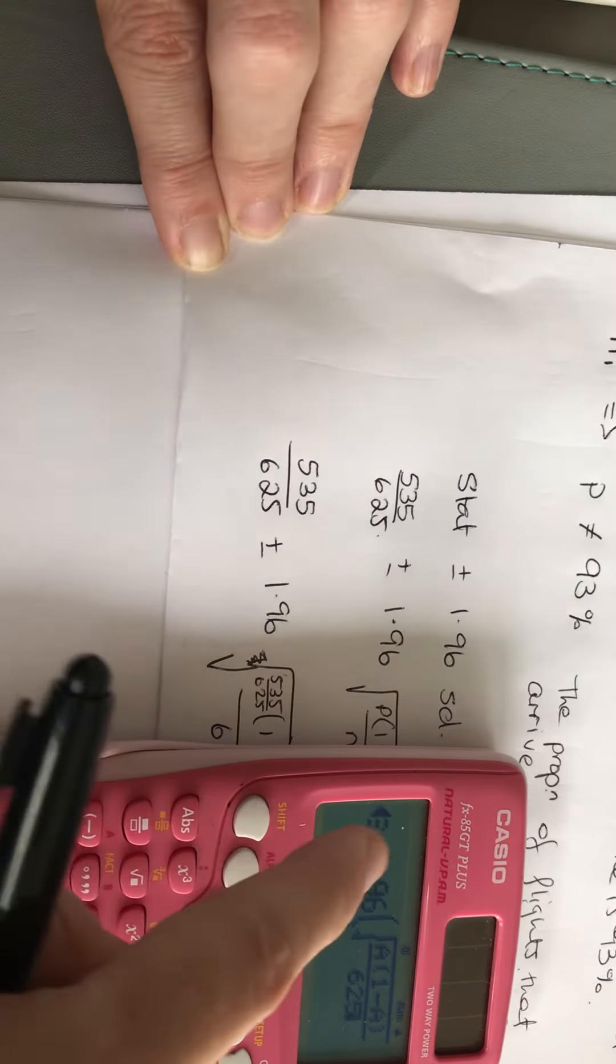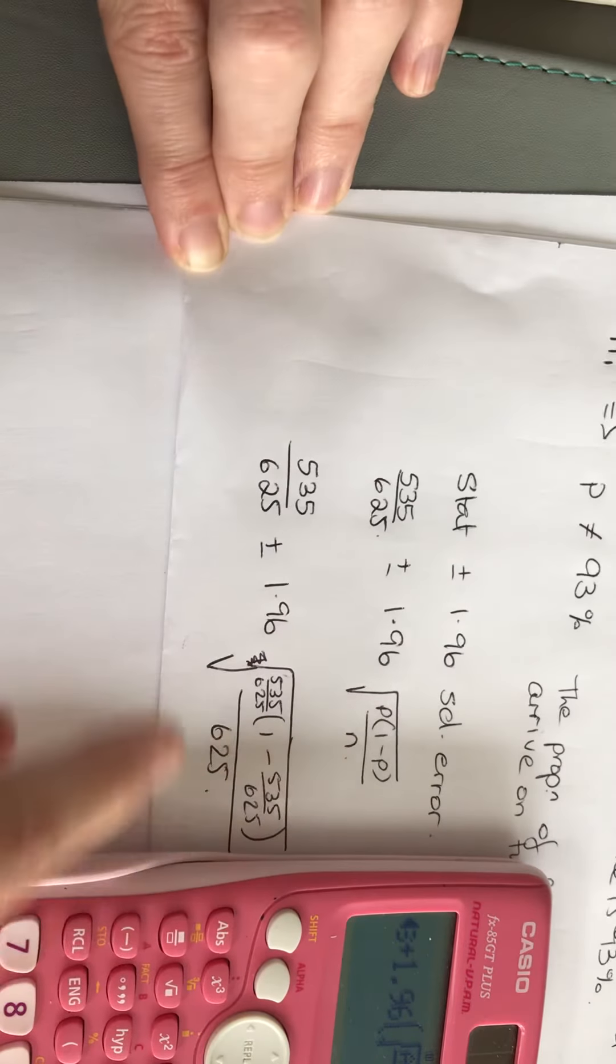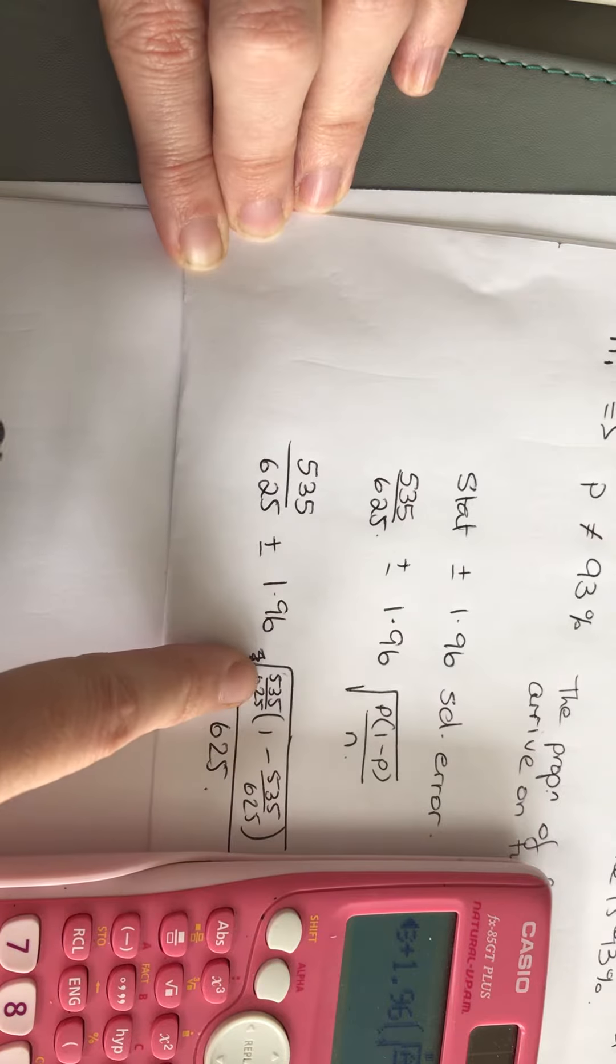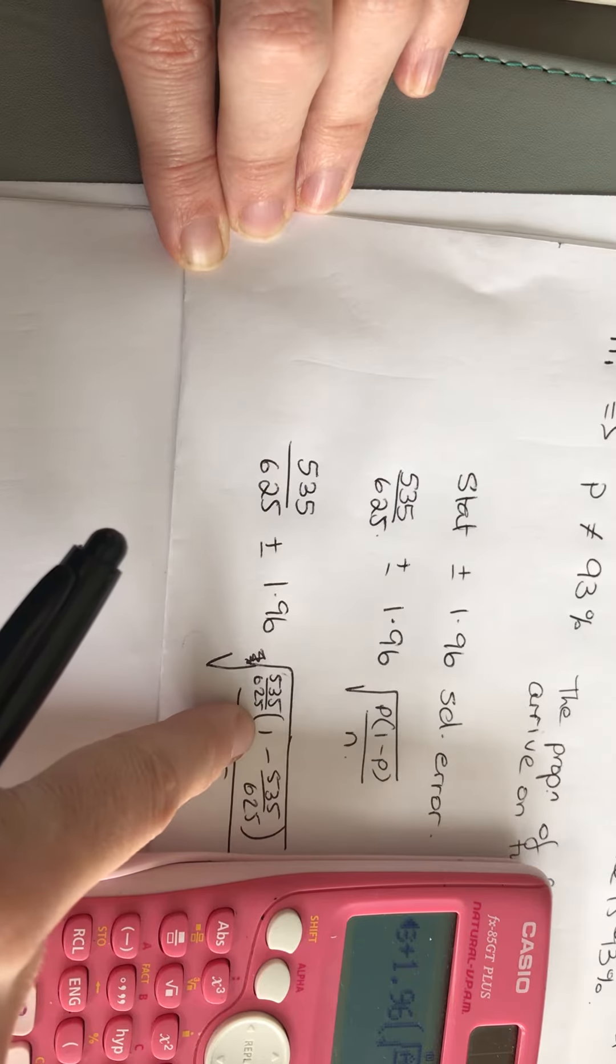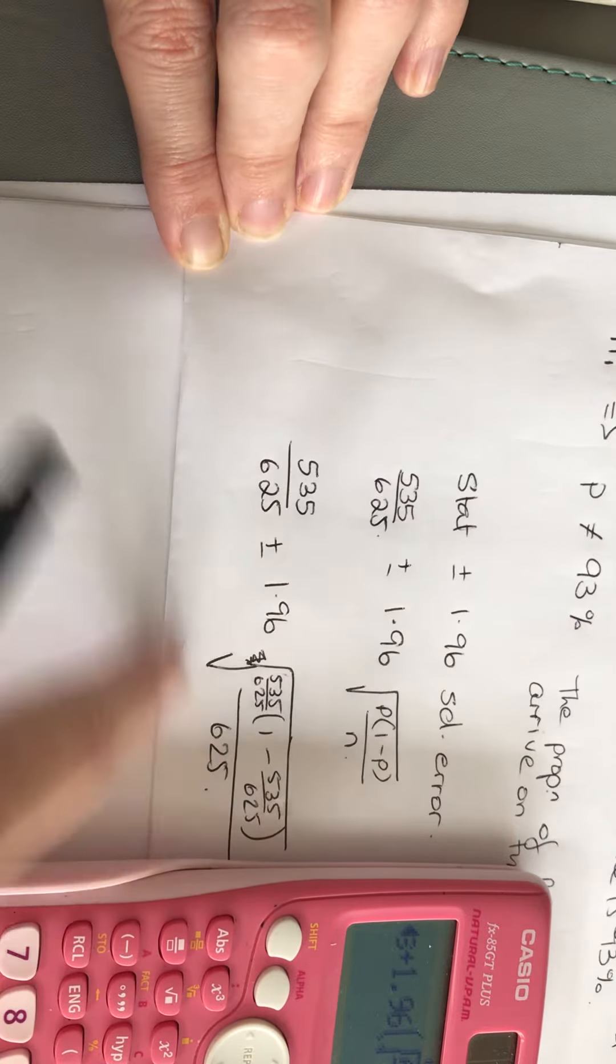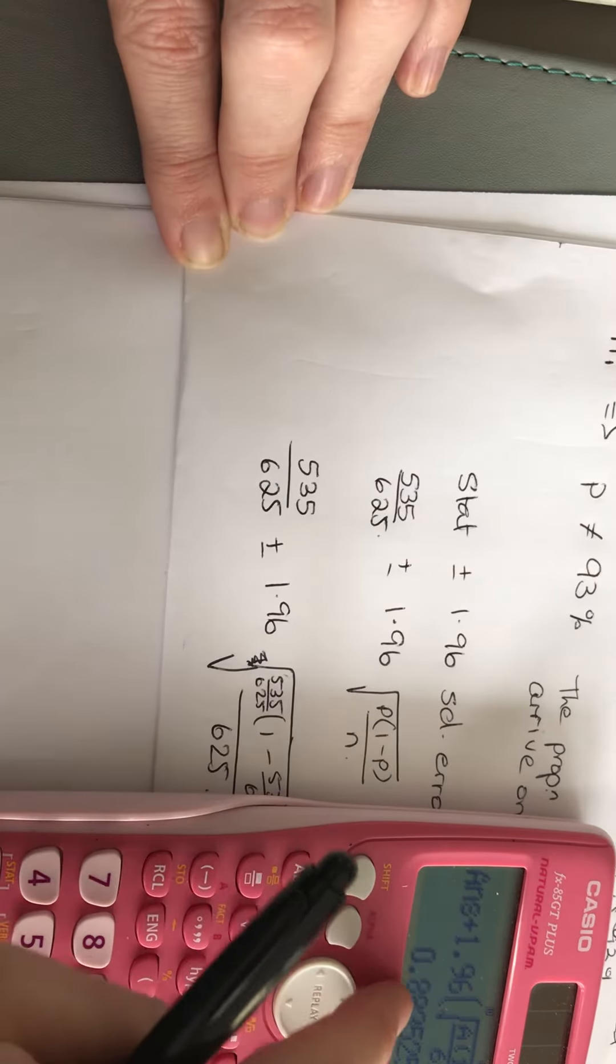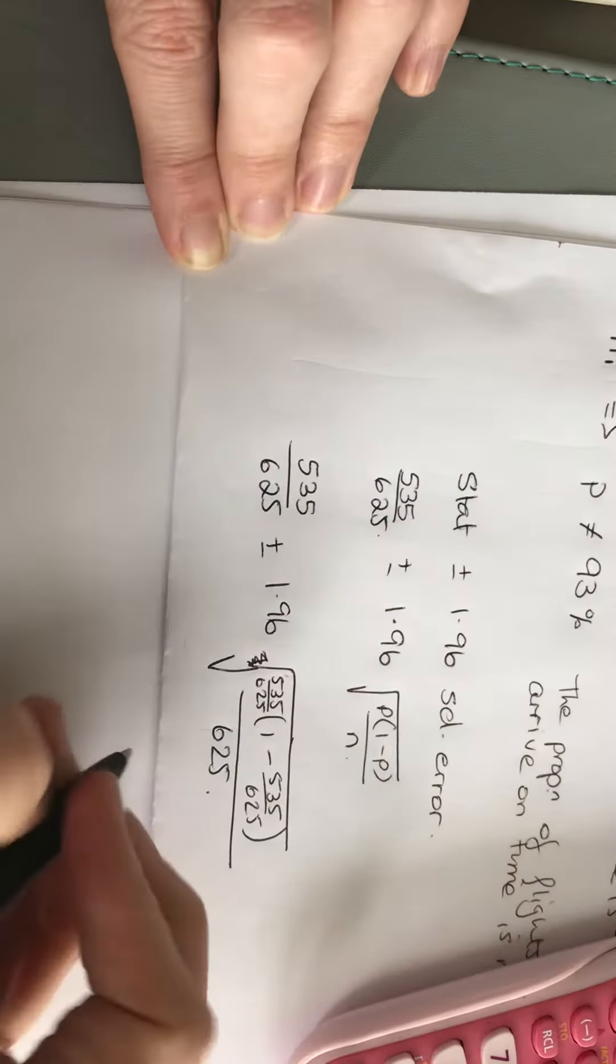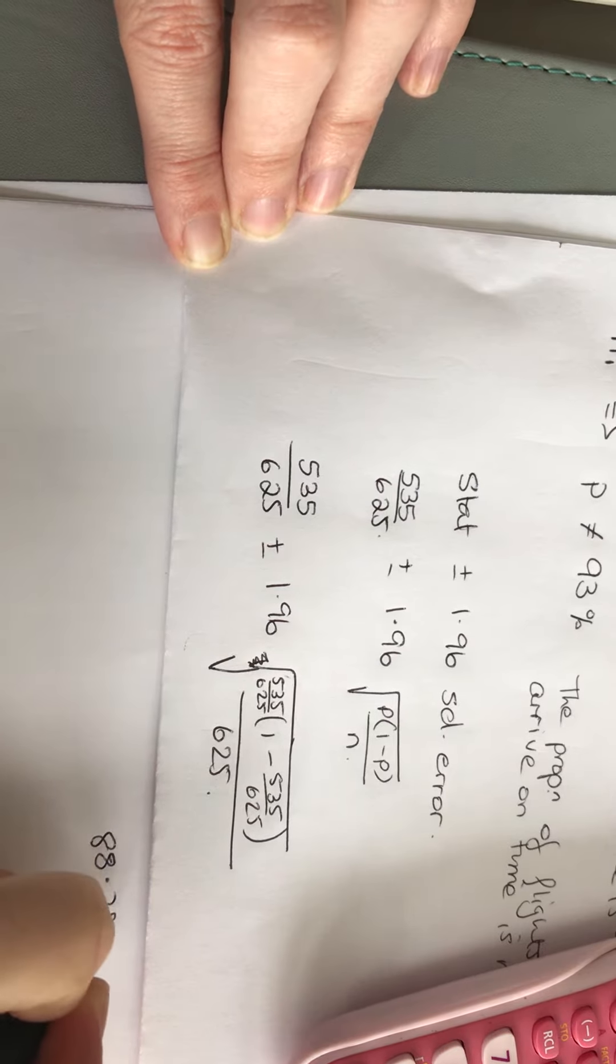So it's my P hat plus or minus 1.96. I don't have P, I have their version of it. I do want to trust them, but I don't know. So P hat bracket 1 minus P hat all over 625. And then I should just be able to press equals and 88.35 is the upper end of my scale, 88.35%.